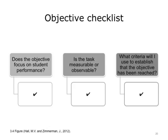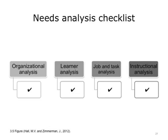To summarize, after you write objectives, check them against these three questions: Does the objective focus on student performance? Is the task measurable or observable? What criteria will I use to establish that the objective has been reached? Another check should be made against your needs analysis results. Well-conducted organizational, learner, job, task, and instructional analyses should lead directly to the specific skills and knowledge that training should target. Checking against the results will ensure that nothing was omitted.